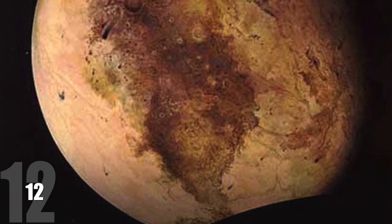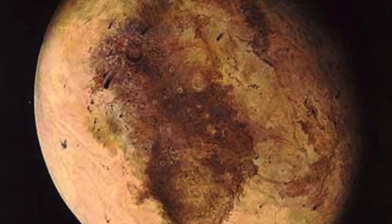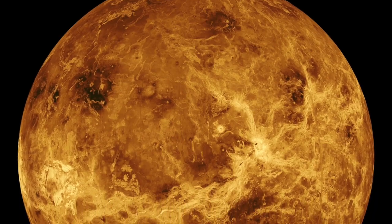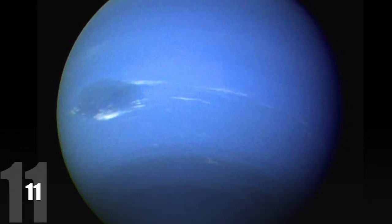A day on Pluto is equivalent to 6 days and 9 hours on Earth, meaning that it has the second slowest rotation in the solar system, after Venus, which takes 243 days to turn on its axis. 11.